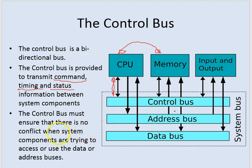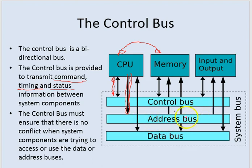The control bus must ensure that there are no conflicts when system components are trying to access or use the data or address buses. There's flow control happening here — for instance, if the CPU is trying to put information on the address bus, the control bus needs to make sure no other information is on the address bus, so it's clear for the CPU to transmit, which will normally be some sort of address to memory to fetch data.